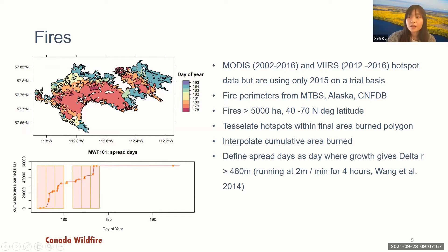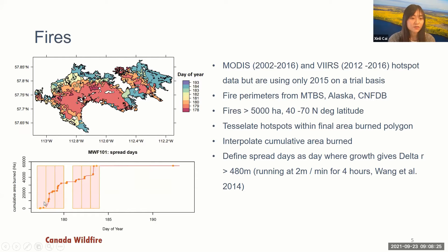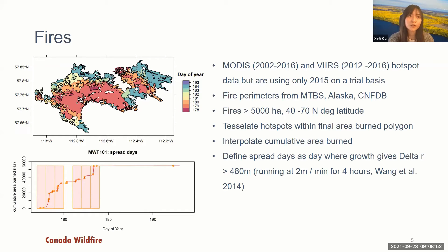The map on the top left shows an example of daily fire progression for a specific fire — the x-axis is day of year and you can see the daily progression. The lower left figure shows accumulated area burned by day of year, showing more area burned on spread days. To define a spread day, we use Shenley Wang's approach: days where fire growth exceeds 480 meters, or the fire is running at 2 meters per minute for four hours. When that growth event is detected, that day is categorized as a spread day.